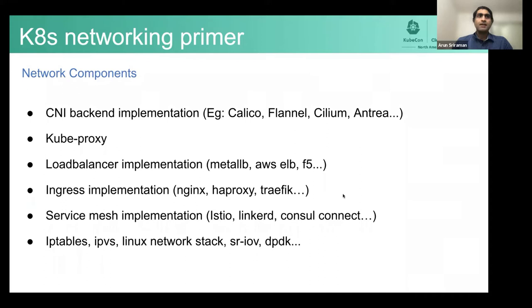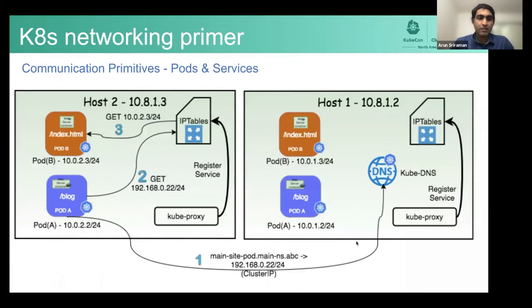So let's look at how communication works across the cluster. Say, for example, two pods in an east-west manner. Let's say you have two pods. One is the blog app, the other is an index app. You have two copies of these. They're running on two different hosts in your Kubernetes cluster.